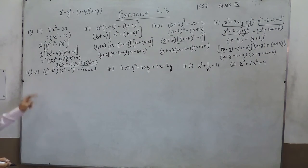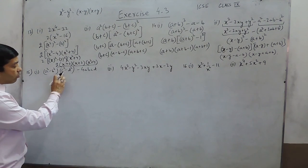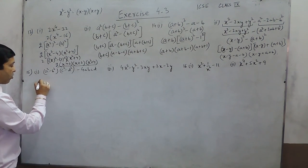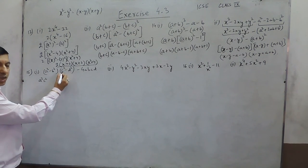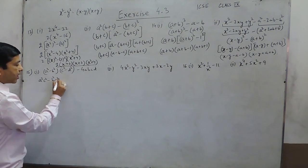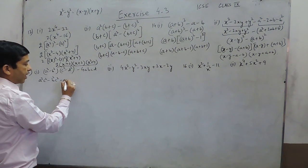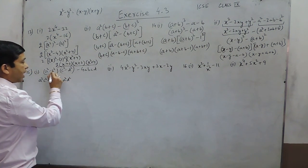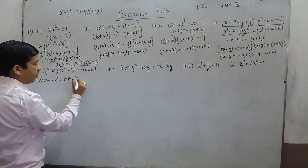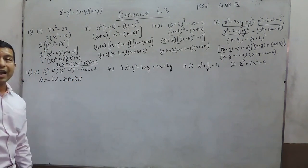Question number 15 part 1 is a bit difficult because first we have to multiply the terms. It comes out to be a square c square minus b square c square, then a square d square and b square d square, and here it is minus 4abcd.